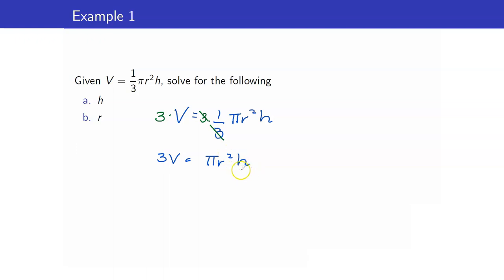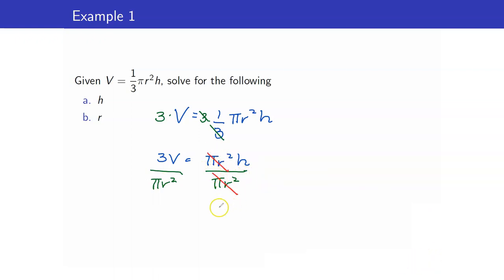Remember, this is your goal here — your h. h is multiplied to pi r squared. To get rid of pi r squared, we divide both sides by pi r squared, so that we now have h is equal to 3v over pi r squared. That's letter A.